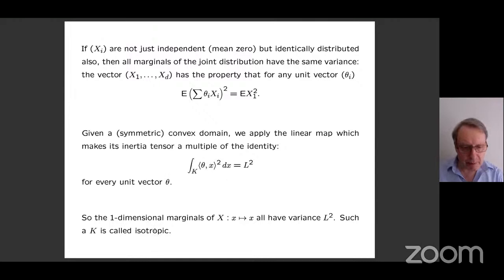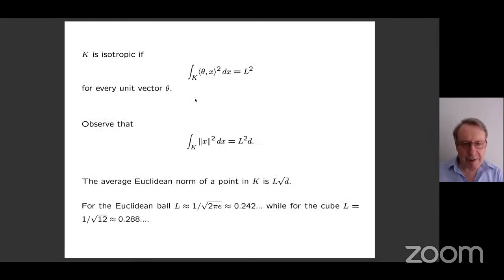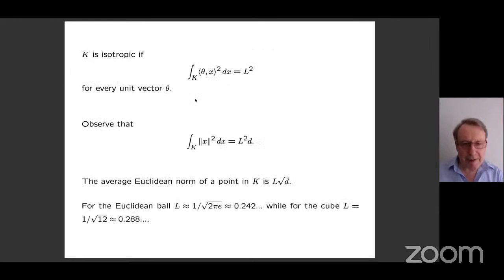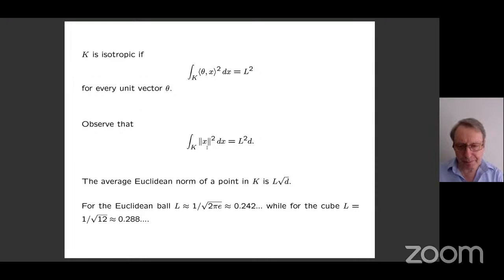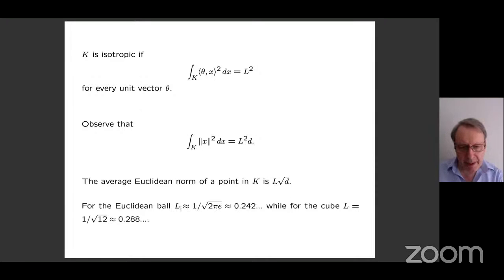One of these transformed sets I will call isotropic. It says that the one-dimensional marginals of the random vector on K all have the same variance L squared. If I apply the formula with theta replaced by elements of an orthonormal basis, then in D dimensions I recover that the integral of the square of the norm is D times L squared. So the average Euclidean norm — the typical norm in the L2 sense — is L times the square root of D.